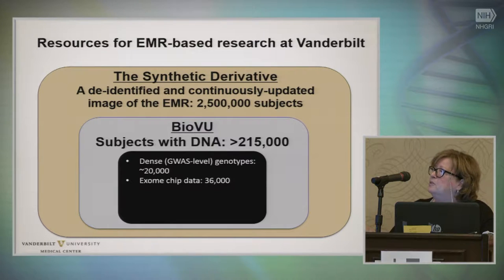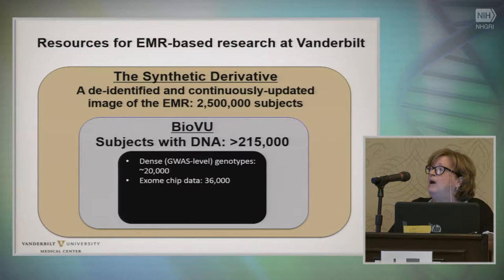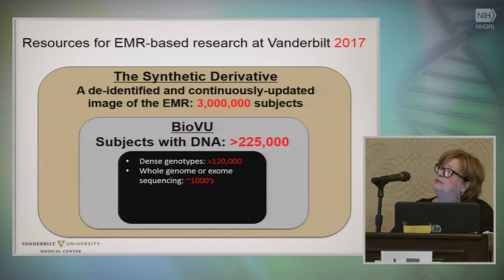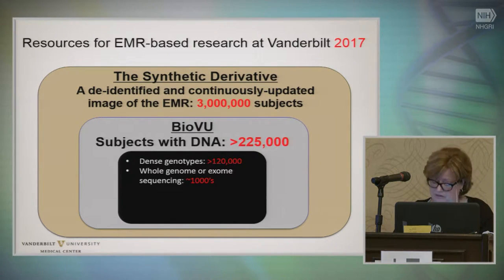Vanderbilt developed their electronic health records in the 1990s. The synthetic derivative is the de-identified and continuously updated image of the EMR, now about 2.5 million subjects. BioVU is the biobank associated with that, and we have about 215,000 subjects with DNA — today there's dense GWAS-level genotyping at about 20,000 and exome chip data at about 36,000. But this time next year, we'll have more than 120,000 subjects with dense genotyping and thousands — maybe tens of thousands — with whole genome or exome sequencing.